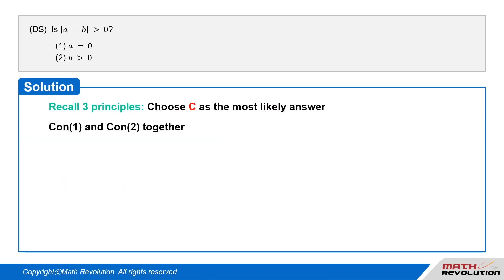Recall three principles and choose C as the most likely answer. Let's take a look at conditions 1 and 2 together. From condition 1, a equals 0. And from condition 2, b is greater than 0. Thus we get b is greater than 0 equals a, or b is greater than a.